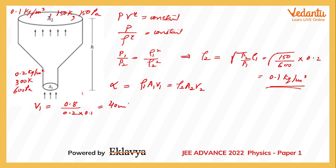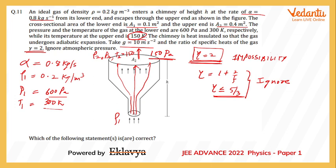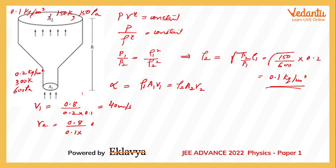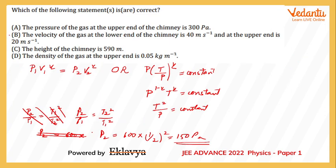For v1: v1 = mass flow rate / (ρ1 × A1) = 0.8 / (0.2 × 0.1) = 40 m/s. For v2: v2 = mass flow rate / (ρ2 × A2) = 0.8 / (0.1 × 0.4) = 20 m/s.